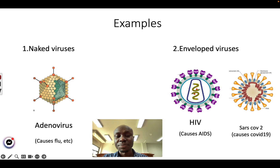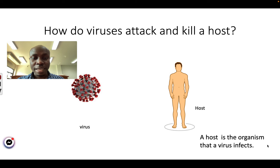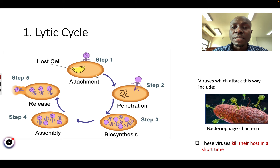Now let's talk about how viruses can attack and kill a host. A host is an organism that the virus will attack or infect. It can be a person or it can be just one cell, like a bacterium cell. There are two ways that viruses use. Let's look at the first way, called the lytic cycle. In step one, the virus — shown here in pink — will attach to the host cell.